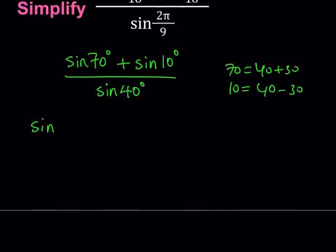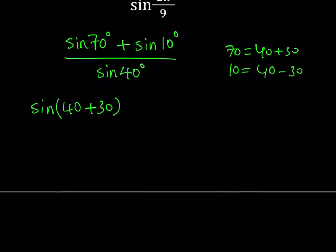So let's go ahead and write 70 degrees as 40 plus 30, and from now on, I'm not going to use the degree symbol, so don't be hard on me because of that. As you know, everything is in degrees, but I'm just not going to write the degree symbols.